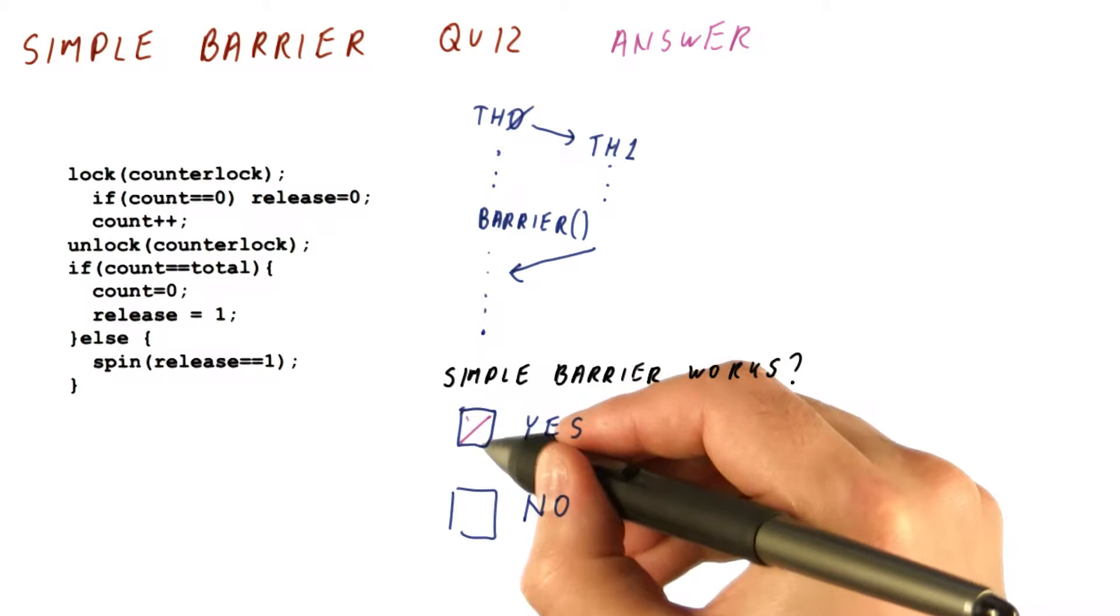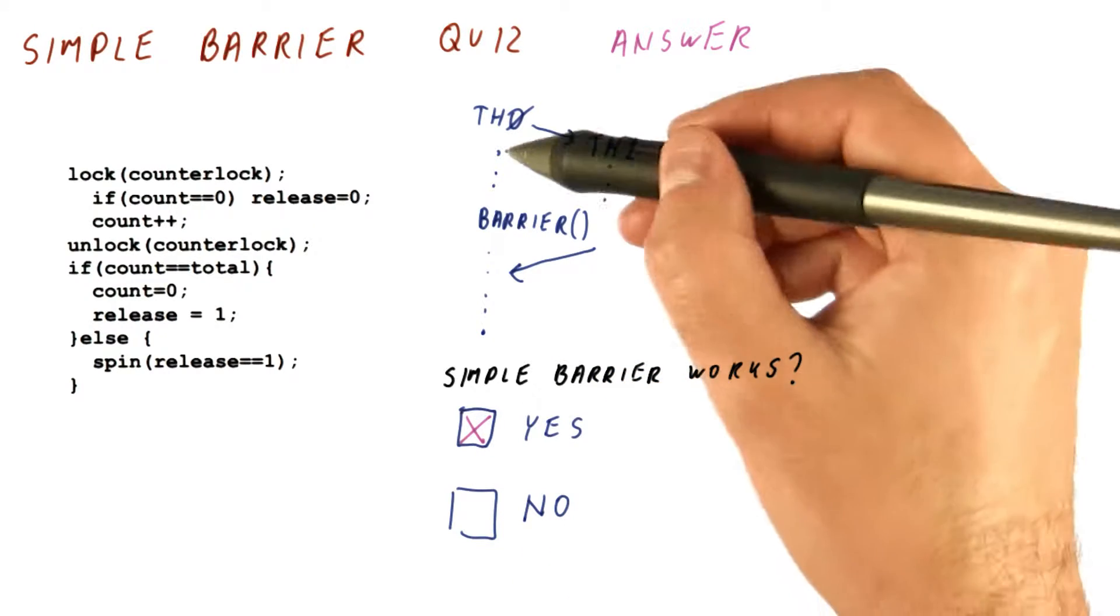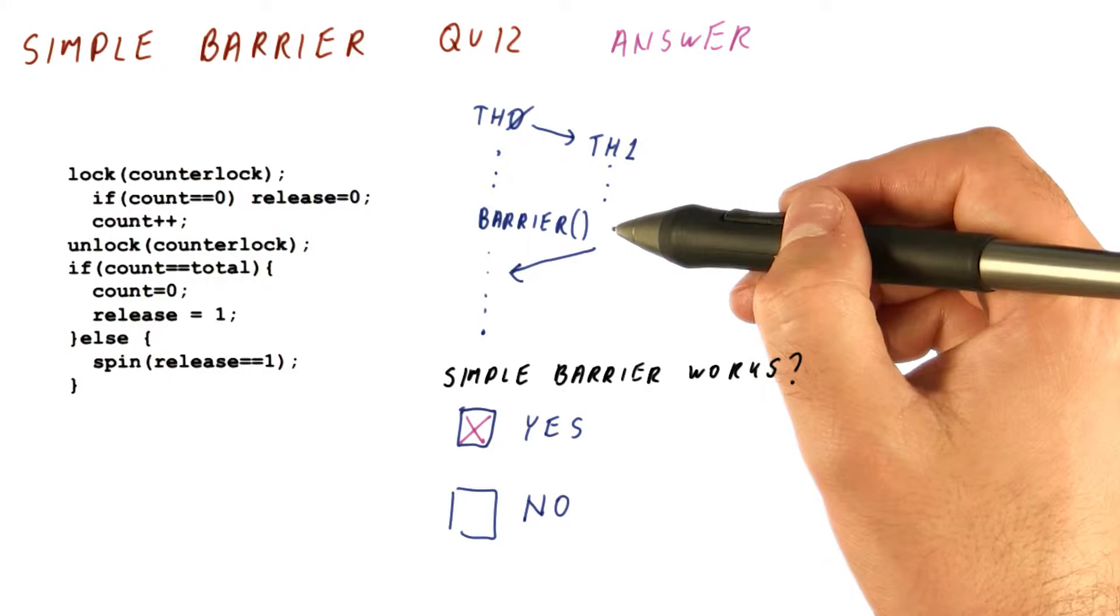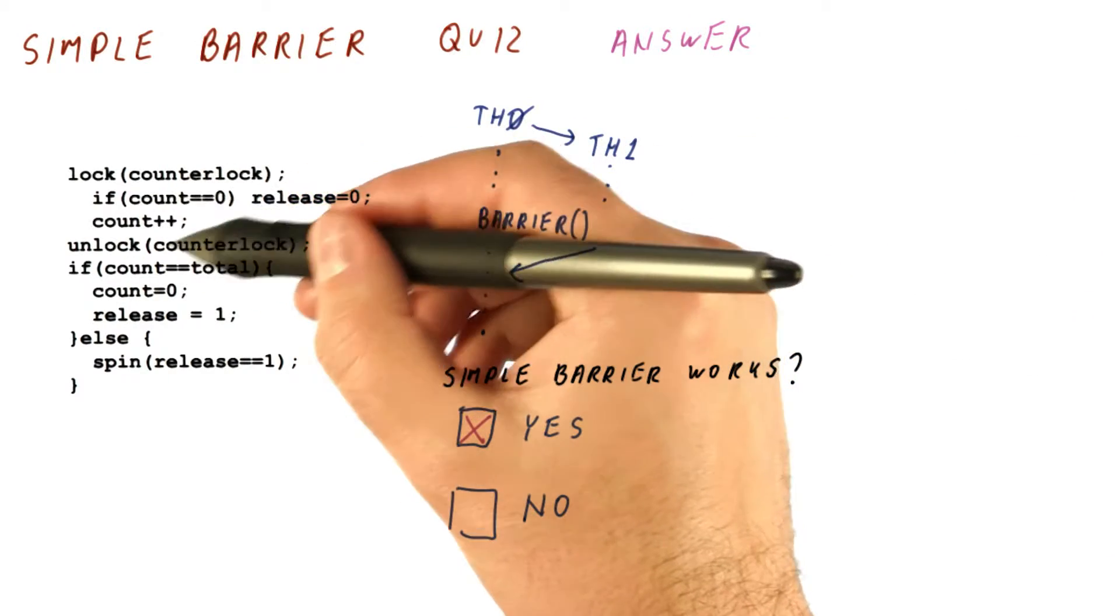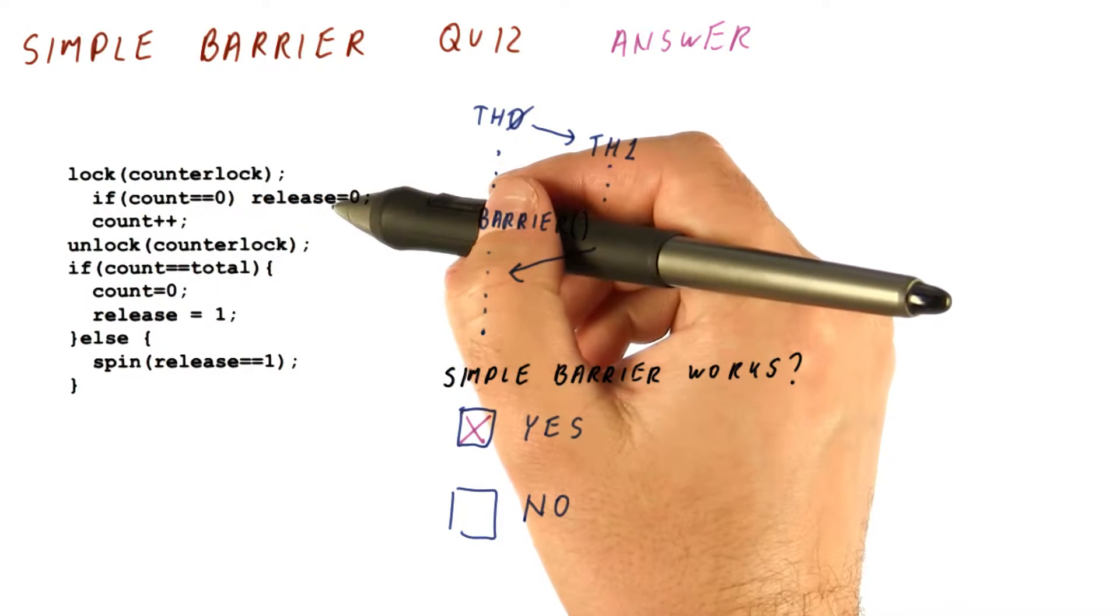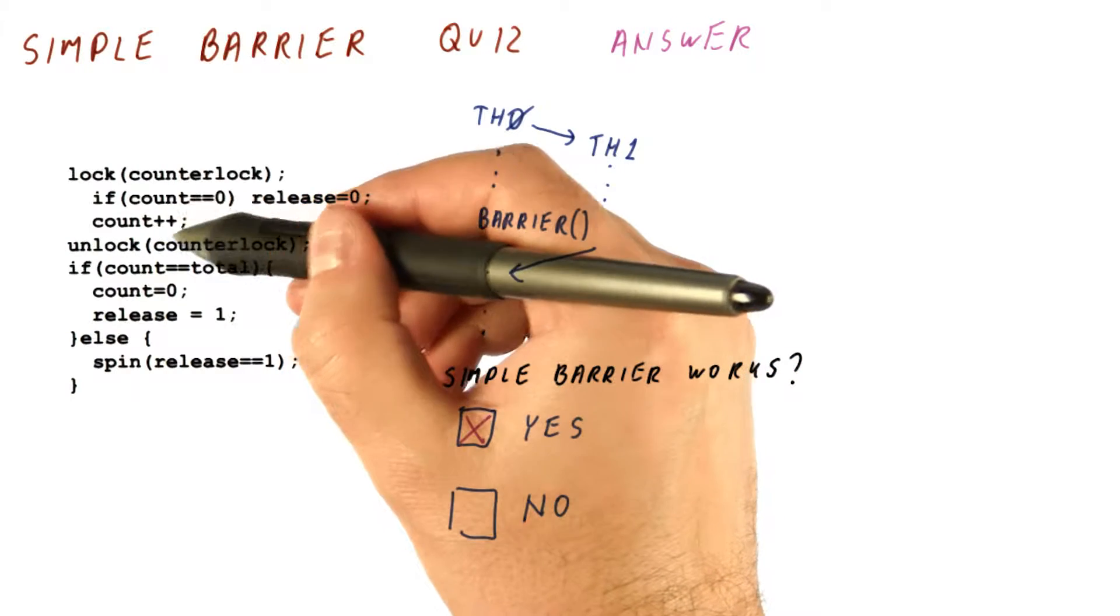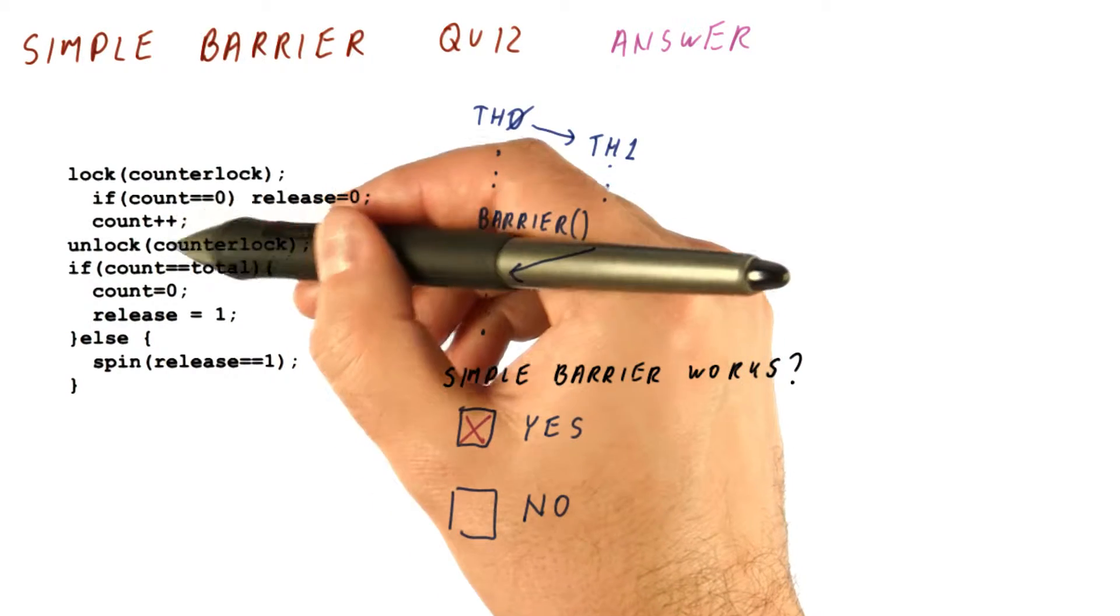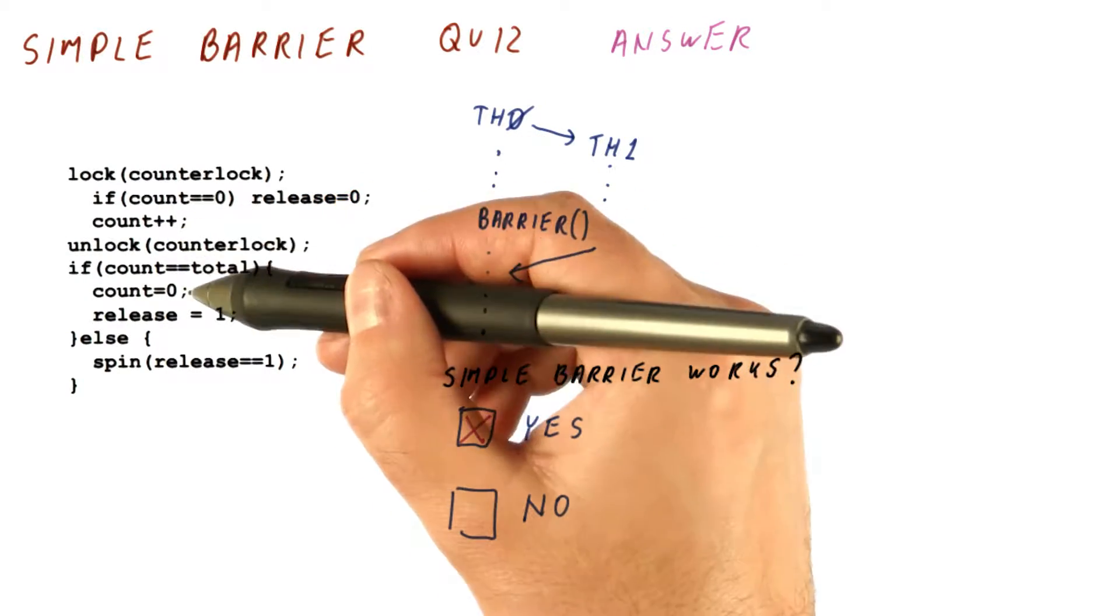And the answer is yes, it does work. If we only do this barrier once, then the first thread that enters this critical section will set the release to zero and increment the count to one. The second thread that reaches this will increment the count to two.